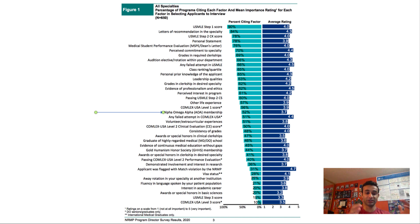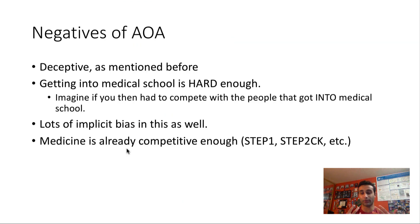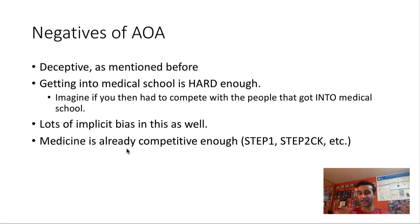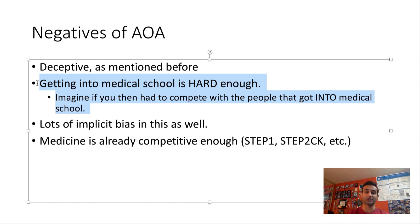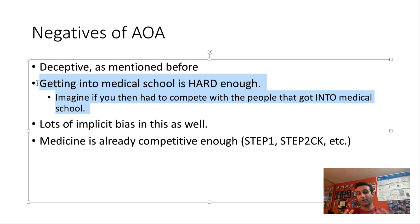Now let's transition to the negatives of AOA. The problem is it can be deceptive — if a med school is pass-fail, some students may choose that school because they don't want competition. But if a pass-fail school has AOA, that kind of defeats the purpose. It's almost like saying: we don't have letter grades, but we do rank you. Personally, getting into medical school was hard enough, and I did not want to compete with the 99 other students in my Yale class. I personally have had mental health issues and struggle with imposter syndrome and competition, so AOA would make me feel more like a gunner, which I didn't want.